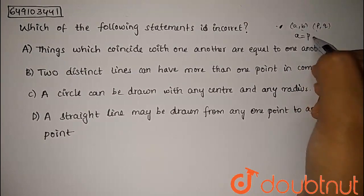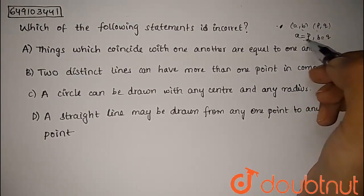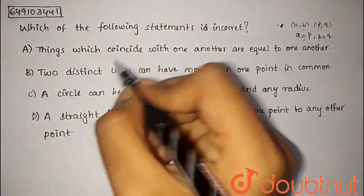Coincide means a equals p and b equals q. We can say that these two are equal. Therefore, this is correct.